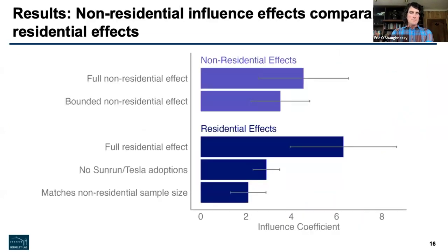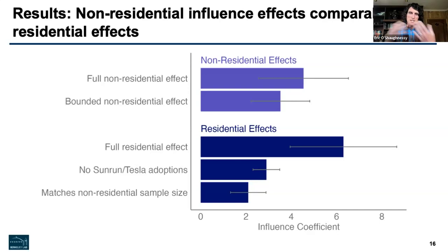One final analysis we do is to get a rough idea of how the non-residential effect compares to effects between households. Through a variety of different analyses, we essentially conclude that they're comparable — the two are similar in magnitude. It does appear that non-residential influence, the amount that affects adoption decisions, is roughly similar to how effective a residential adoption is on a residential household's decision.